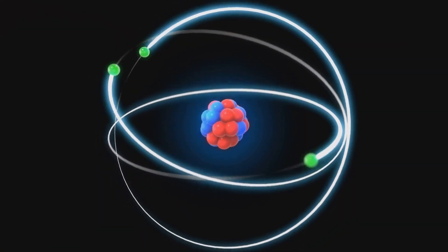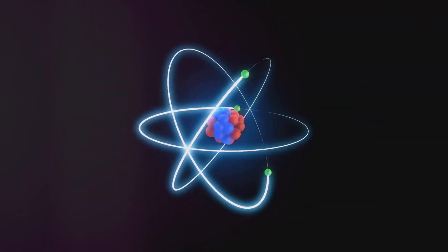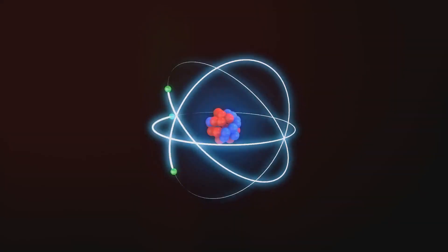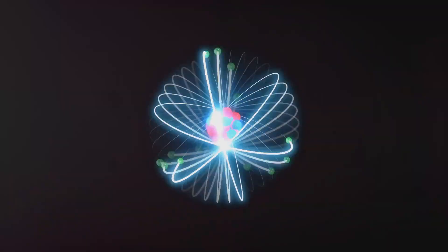But when we try to observe which slit the particle goes through, it behaves like a particle again. This illustrates the dual nature of matter and energy in the quantum world. In the quantum world, things aren't always what they seem.